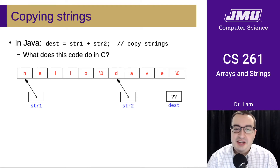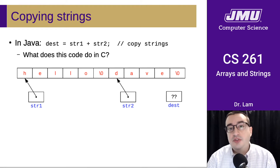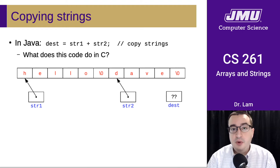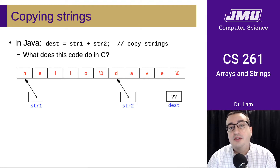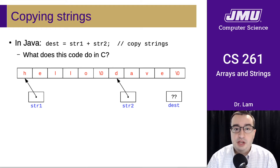We've arrived at the first major pain point in moving from Java to C, which is that string manipulation is much more difficult in C because of the way that you're accessing memory at a lower level and because C doesn't really have built-in primitives for manipulating strings.